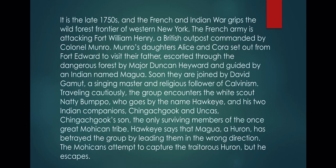Monroe's daughters — it is very important to know who Monroe's daughters are. So Monroe's daughters, Alison and Cora, set out from Fort Edward to visit their father, escorted through the dangerous forest by Major Duncan Heward and guided by an Indian named Magwa. Soon they are joined by David Gamet, a singing master and religious follower of Calvinism.